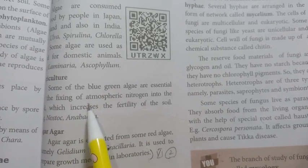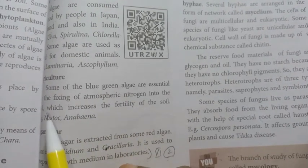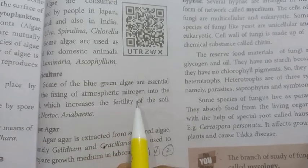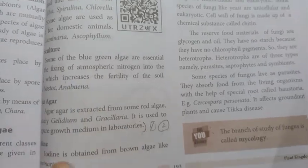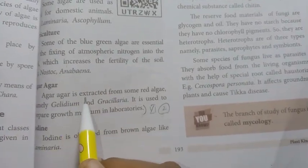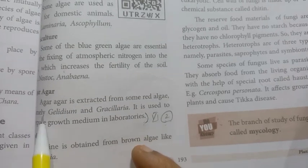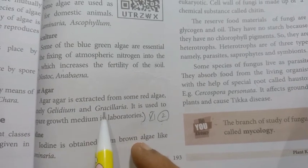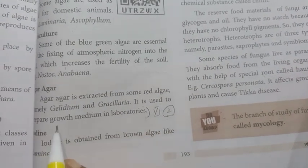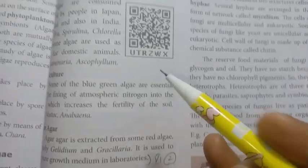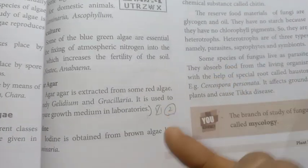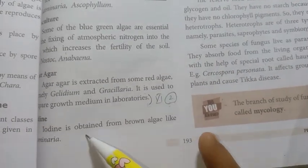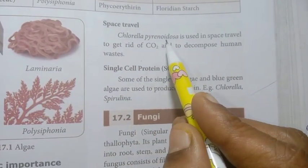Blue-green algae fix atmospheric nitrogen and increase soil fertility — examples include Nostoc and Anabaena. Agar-agar is extracted from red algae, namely Gelidium and Gracilaria, and is used to prepare growth medium in laboratories.